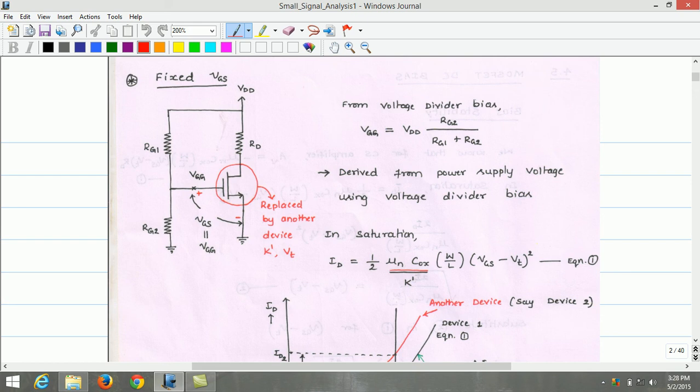Furthermore, both the threshold voltage and mobility mu n depend on temperature with the result that if we fix the value of gate source voltage, the drain current Id becomes very much temperature dependent.